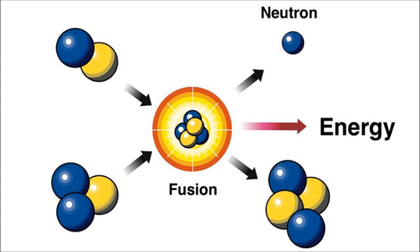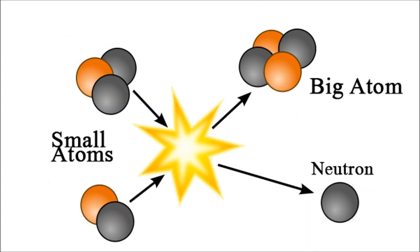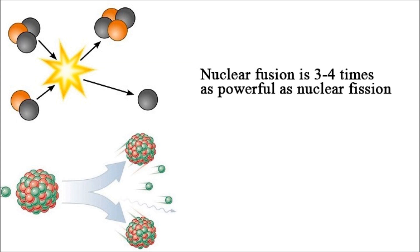Now we will discuss nuclear fusion. Nuclear fusion is a process during which two atoms combine and make a bigger atom. The result of nuclear fusion is a bigger atom that has the same number of protons as the first two atoms combined, and an extra neutron. Nuclear fusion creates three to four times as much energy as nuclear fission, and that is because little energy is needed to keep the resulting atoms, protons, and neutrons together.